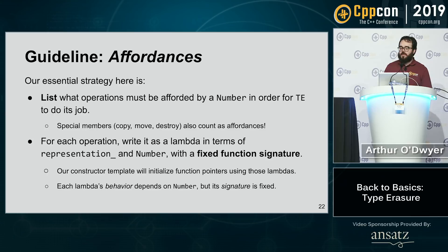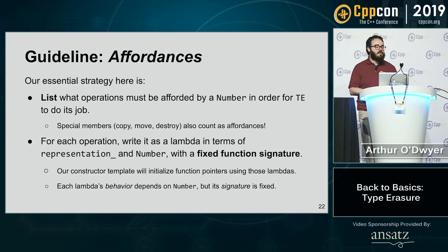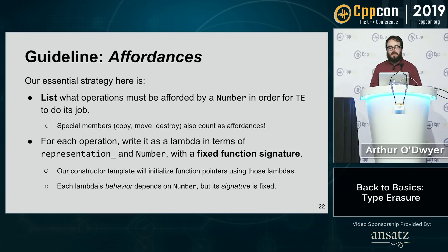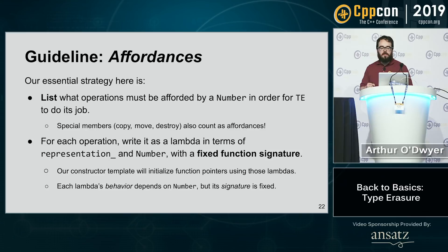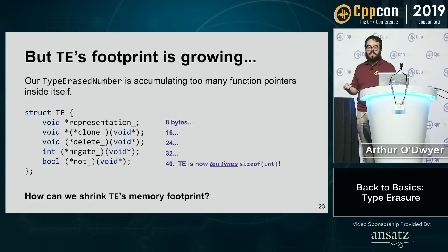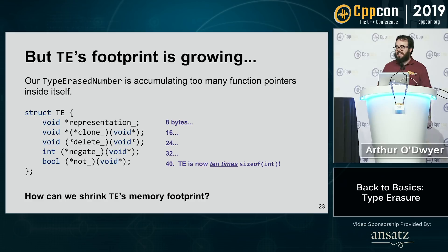Our essential strategy: list what operations must be afforded by a number for type_erased_number to do its job. Special members count as affordances too — if you need to copy a number, that's an affordance you must type-erase. For each operation, write it as a lambda in terms of the representation pointer and the type parameter from the constructor template. Remember: the type_erased_number type itself is not a template; it's concrete with a fixed layout. But its constructor is a template that sets everything up. If I have four affordances, I've got 40 bytes in my struct.